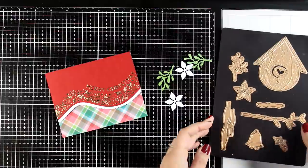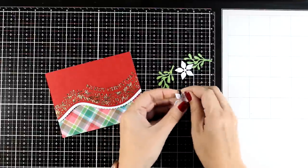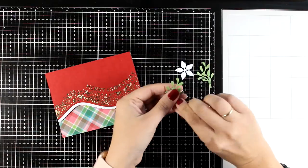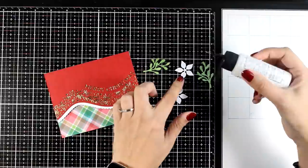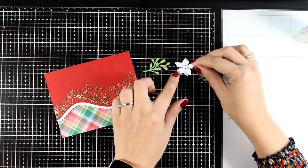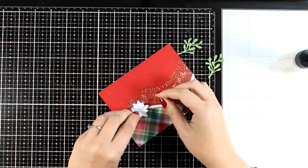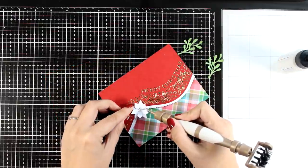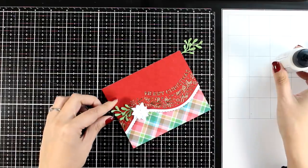Just because this die set does have a big birdhouse doesn't mean that you have to use it every time you grab the set. I designed the set making sure that beside that big birdhouse that you get, you also get little dies that can be used on pretty much every holiday card to embellish it. So you get mistletoe, poinsettias, holly berries, a little bell bow, you get so many things to play with.